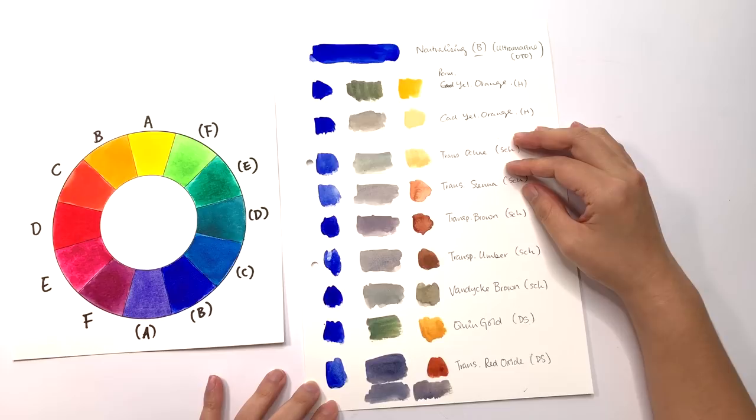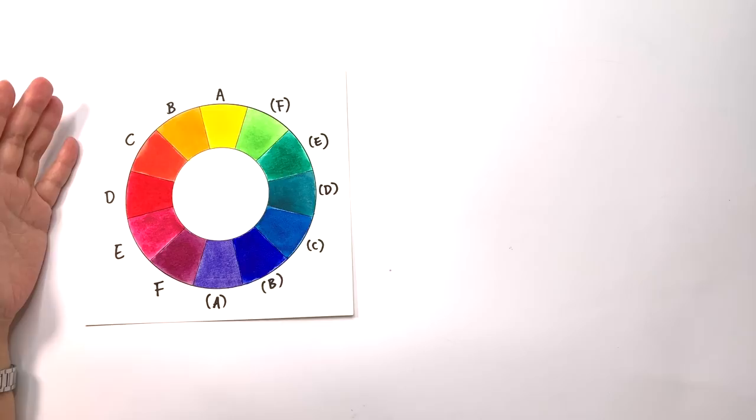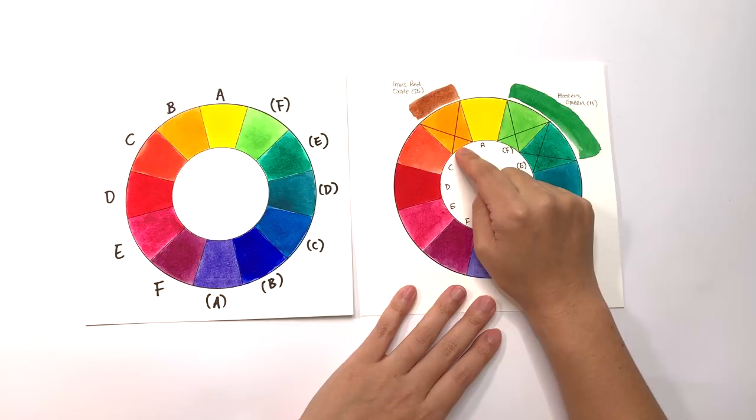So overall, I went from this 12 color color wheel palette to something more like this. I replaced the yellow orange with the trans red oxide. And I replaced the yellow green and the May green with the hooker's green.